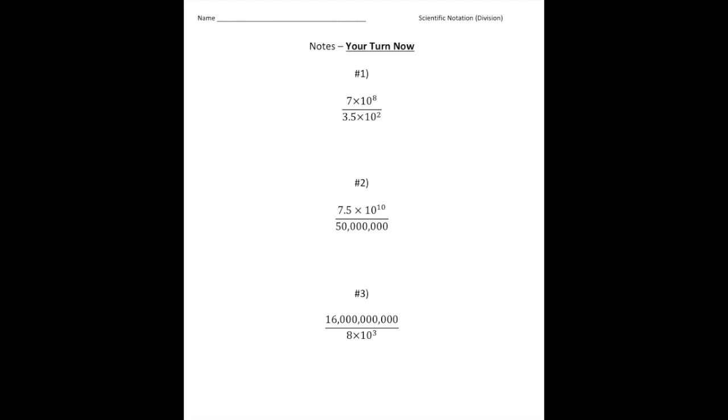Alright, welcome back. Let's see how you did with these problems. The first problem, you had 7 times 10 to the 8th divided by 3.5 times 10 squared.